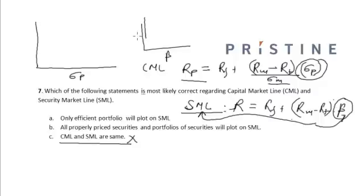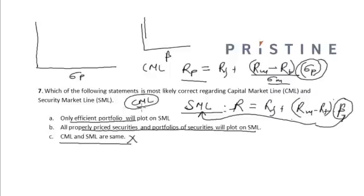All properly priced securities and portfolios of securities will plot on SML, and only efficient portfolios plot on CML. The Capital Market Line is based on the assumption of homogeneous expectations, so only efficient portfolios will plot on the Capital Market Line, whereas all properly priced securities and portfolio securities will plot on the Security Market Line.